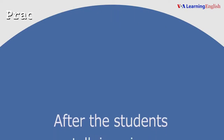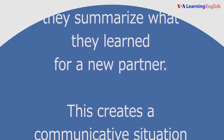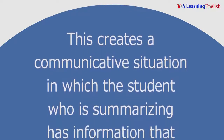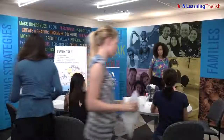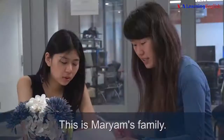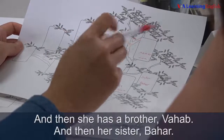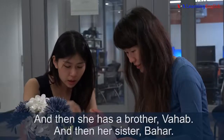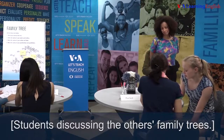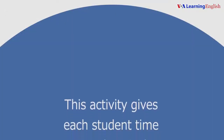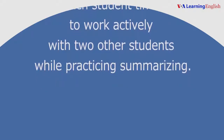Practicing the strategy: after the students talk in pairs, they summarize what they learned for a new partner. This creates a communicative situation in which the student who is summarizing has information that the listening student does not have. This is Miriam's family. She has a dad and a mom, and then she has a brother and her sister Bahar. How old is she? She's six years older. This is Jamie. She has two, and her brother. This activity gives each student time to work actively with two other students while practicing summarizing.